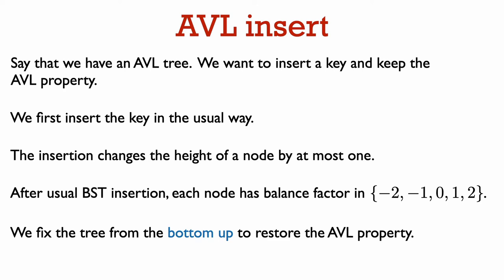Moreover, adding a new leaf will only potentially affect the heights of nodes on the path from this new leaf to the root. Thus, in the second phase to restore the AVL property, we will walk back up the tree from the newly inserted leaf to the root and restore the AVL property at any node along the way that has gotten out of balance.